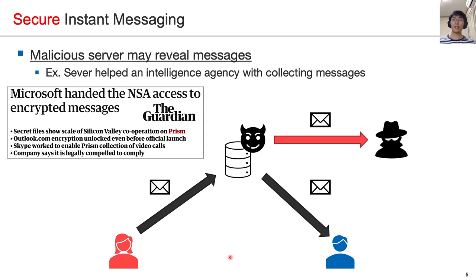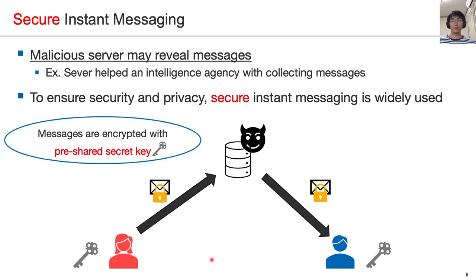However, there is a risk that a malicious server may read or reveal messages. In fact, it was revealed that a server helped an intelligence agency with collecting messages, like this figure. Therefore, to ensure security and privacy of messages, secure instant messaging is widely used. In secure instant messaging, messages are encrypted with a pre-shared secret key. Hence, the server cannot access the encrypted contents.